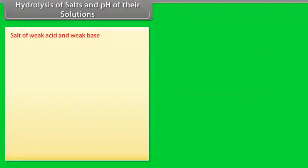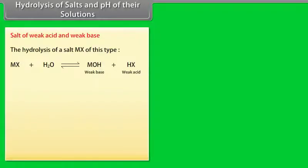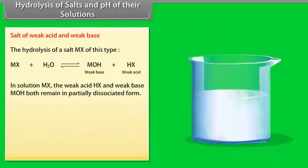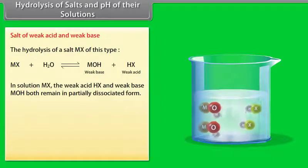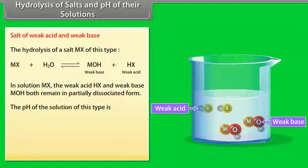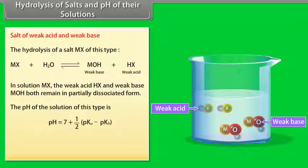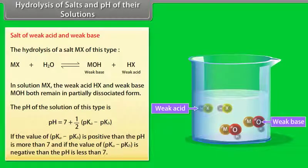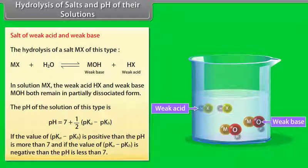Salt of weak acid and weak base: In solution, both the weak acid HX and the weak base MOH remain in partially dissociated form. The pH = 7 + ½(pKa − pKb). If pKa − pKb is positive, pH is more than 7; if pKa − pKb is negative, pH is less than 7.